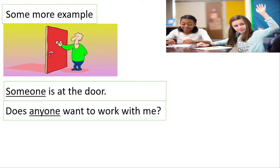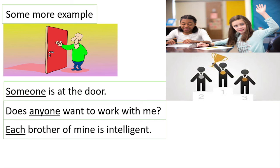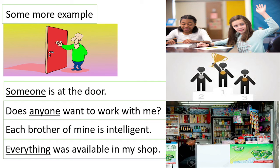Next: does dash want to walk with me? The answer is: does anyone want to walk with me? Next: dash brother of mine is intelligent. The answer is: each brother of mine is intelligent. Next: dash was available in my shop. The answer is: everything was available in my shop. No specific material is mentioned, so 'everything' is an indirect pronoun.